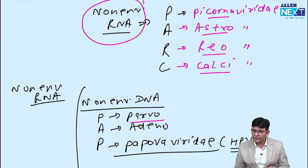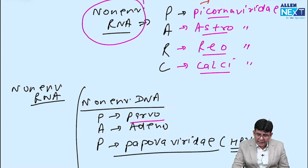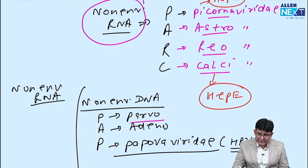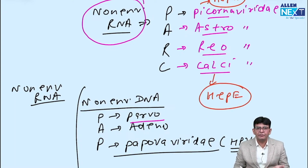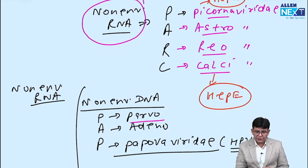So now you can see it yourself — it's a non-enveloped, single-stranded DNA virus, which is what is being asked. Additionally, within Picornaviridae is Hepatitis A, and within Calciviridae is Hepatitis E. Both Hepatitis A and E are non-enveloped RNA viruses. This is the way to approach these types of questions.